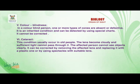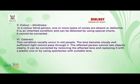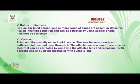The next defect is cataracts. This condition usually occurs in old people. The lens becomes clouded and insufficient light cannot pass through it, so the affected person cannot see objects clearly. It can be corrected by removing the affected lens and replacing it with a plastic one, or by using spectacles with a suitable lens.